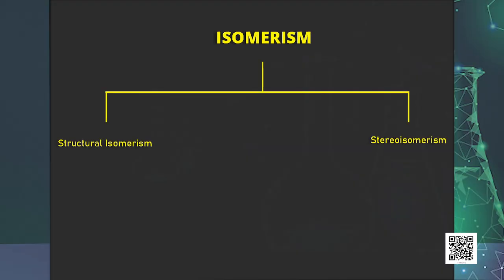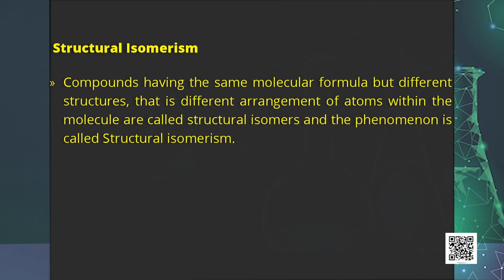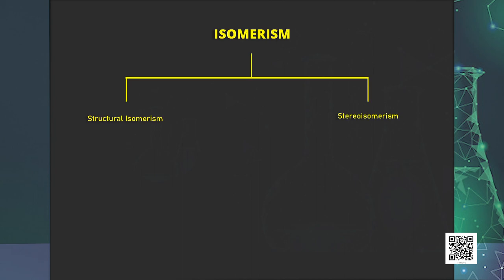Isomerism is common among organic compounds and accounts for the large number of organic compounds. For example, pentane has three isomers, hexane has five isomers, and decane has 75 isomers. Isomerism is of two types: structural isomerism and stereoisomerism. Compounds having the same molecular formula but different arrangements of atoms within the molecule are called structural isomers.